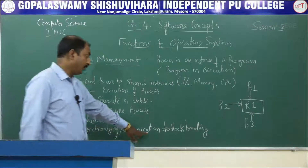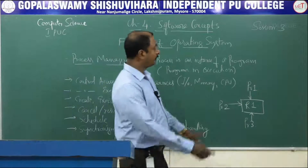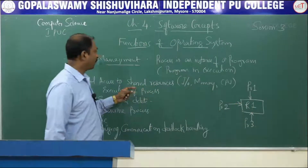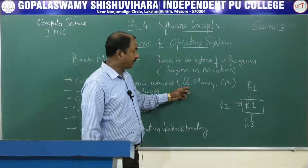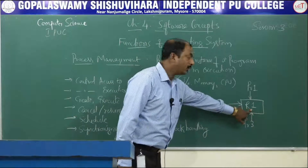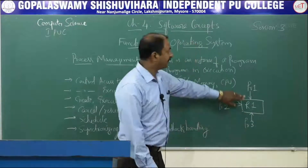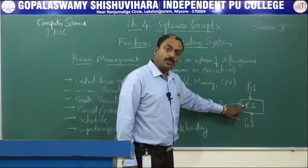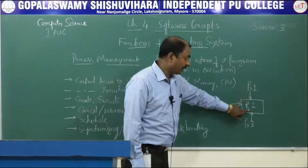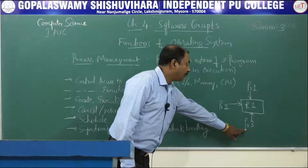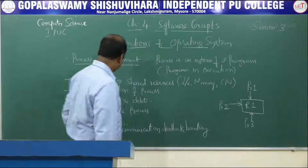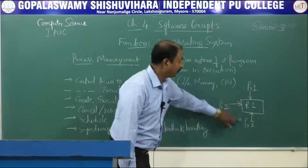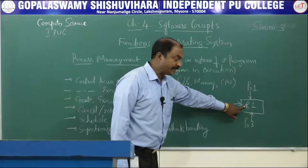Next is synchronizing communication and deadlock handling. Look at this small diagram — here there is one resource, for example a keyboard, and multiple programs: program 1, program 2, and program 3, all accepting data from the same keyboard. The operating system takes care of these shared resources so there is no problem for these programs to accept data from the shared resource.